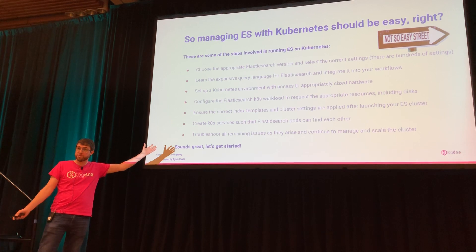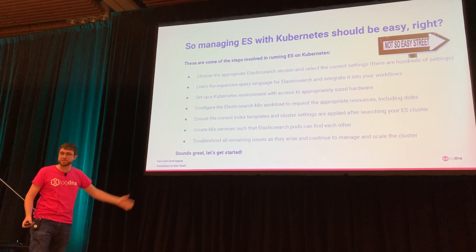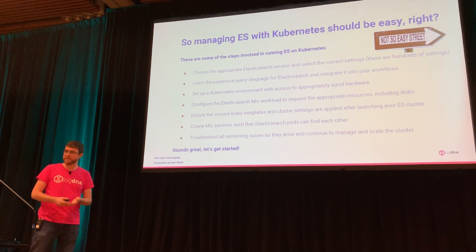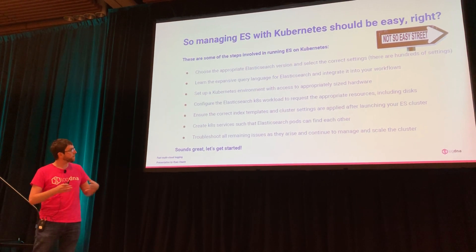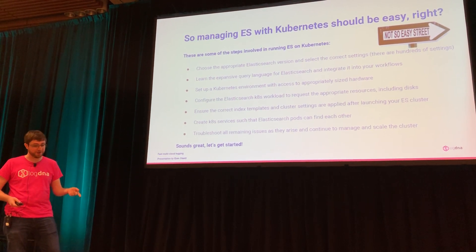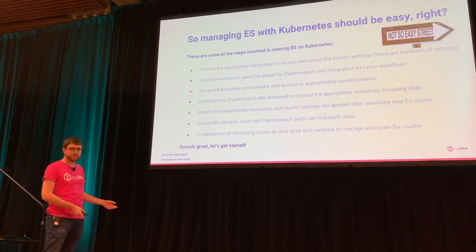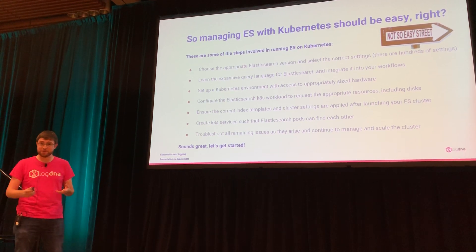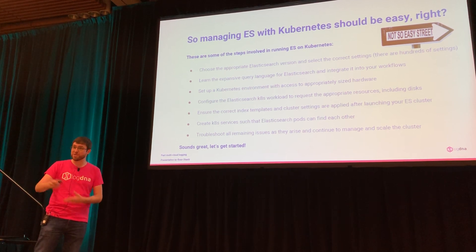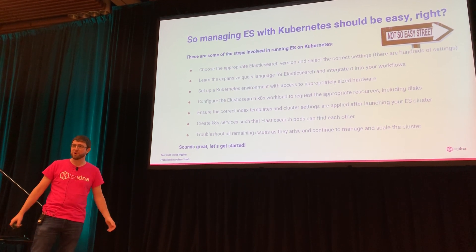So it should be pretty easy to scale Elasticsearch in Kubernetes, right? Well, here's all you've got to do. Choose the version of Elasticsearch that works for you — read through all the changelogs, not too bad. Go through the hundreds of settings used to configure Elasticsearch and decide which ones are right for you. Learn the query language. Integrate that with your existing workflows. Set up a Kubernetes environment sized appropriately for your use case. Configure the Kubernetes workloads — the YAMLs, the pod specs, the services, the disks. Set up index templates and other configurations. And of course, troubleshoot issues as they arise.